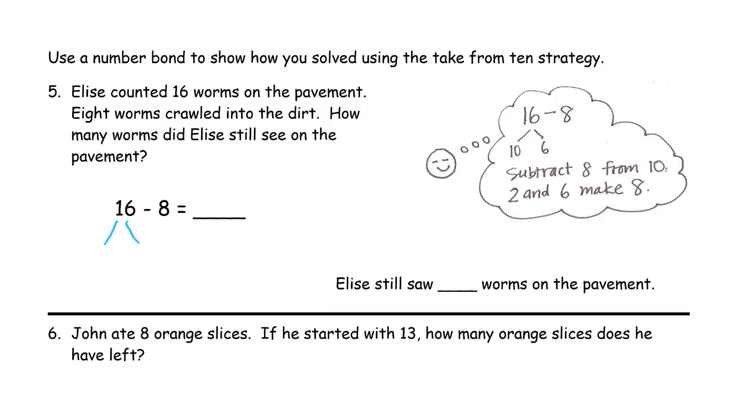So it's faster, easier, and a better chance of not making a counting mistake and a better chance of getting the right answer too, for taking from 10 on this one. So 16 is 10, 6. And we know when we take 8 away from the 10, there's going to be 2 left. So that's, subtract 8 from 10. We could write the whole thing out. 10 minus 8 equals 2. That's how we got that 2 right there. And then we're going to say that 2 plus the other, plus the 6 that's left. We're just putting the leftovers back together again. That's 8, so there's 8 left. And Elsie still saw 8 worms on the pavement.